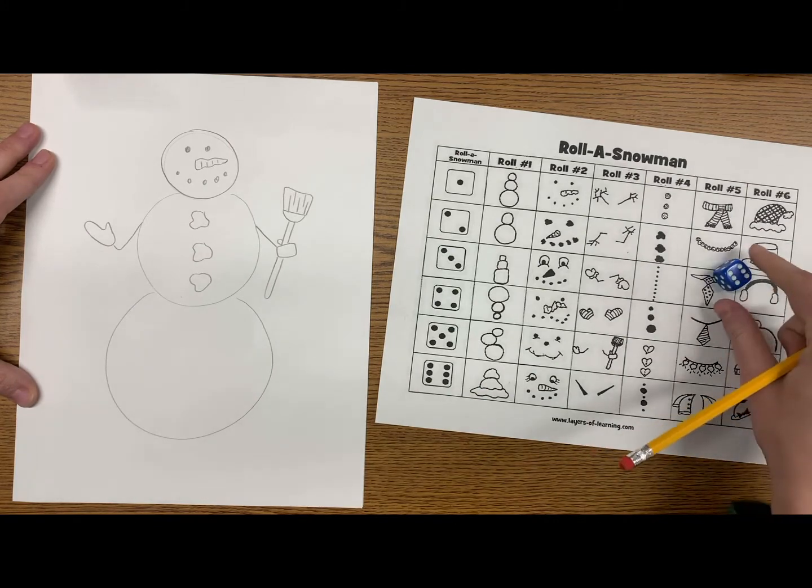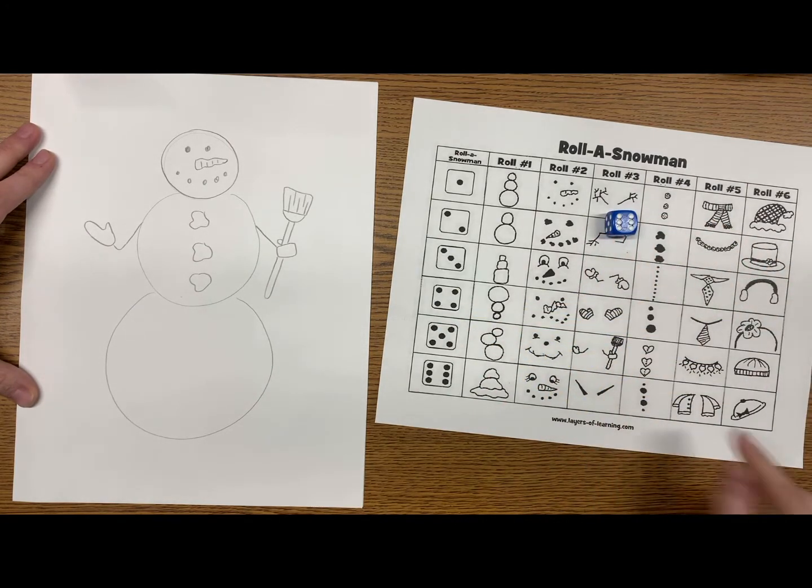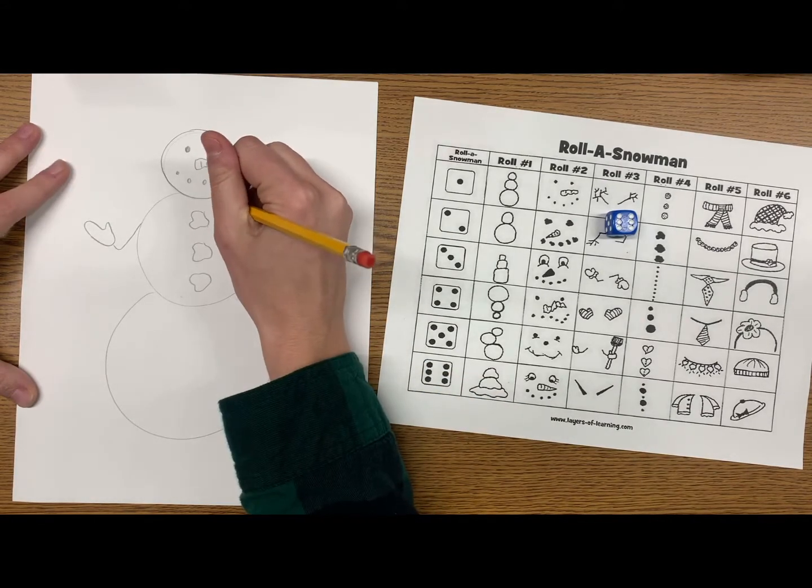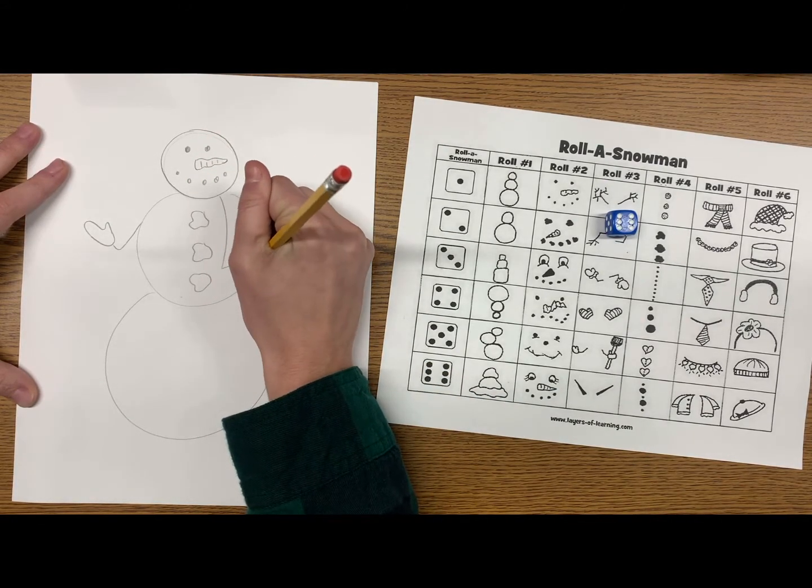Roll number five, I got a six. So I come down, it looks like my snowman is going to be wearing some kind of shirt or a coat. So I'm going to add that to my snowman.